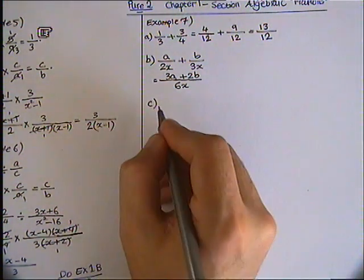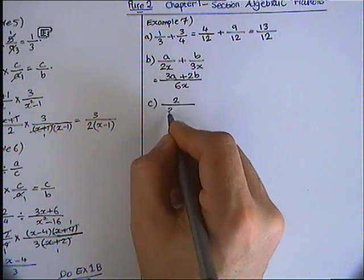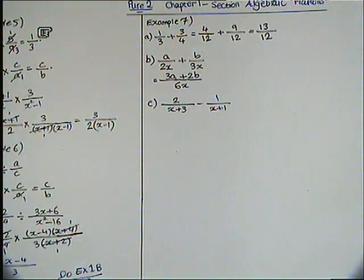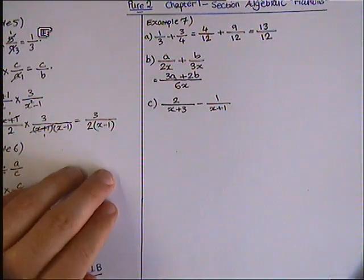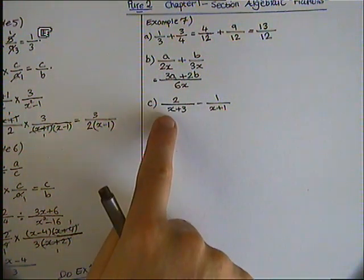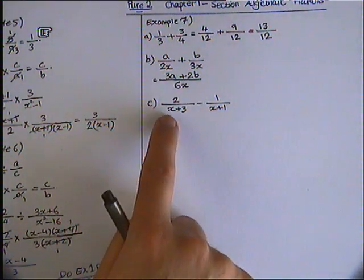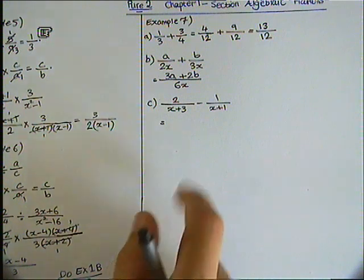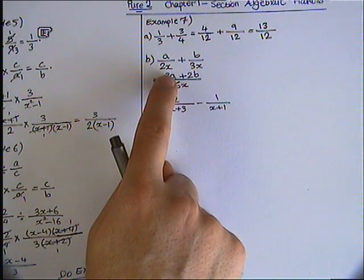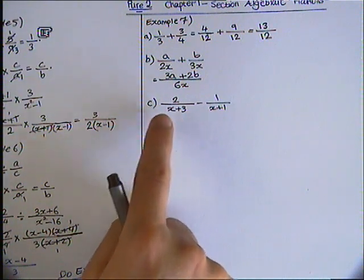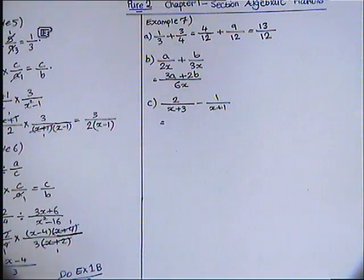Example 7c: 2 over x plus 3 minus 1 over x plus 1. X plus 3, x plus 1 - so the denominators are not the same. You might think there is x in this one and in this one, but x is not by itself here. X plus 3 is one term, and x plus 1 is one term as well. So it's not the same as the previous one. The previous one was 2x, 3x - it was multiplication. But here, it's addition. Therefore, this x is not the same. X plus 3 is not the same as x plus 1.